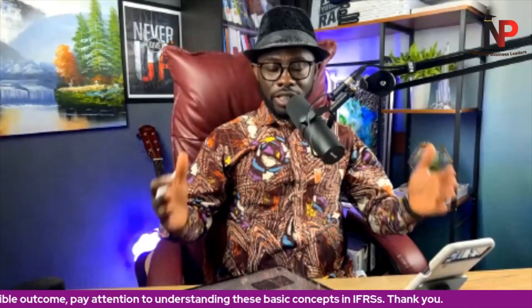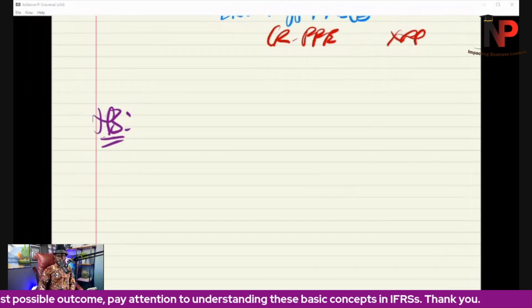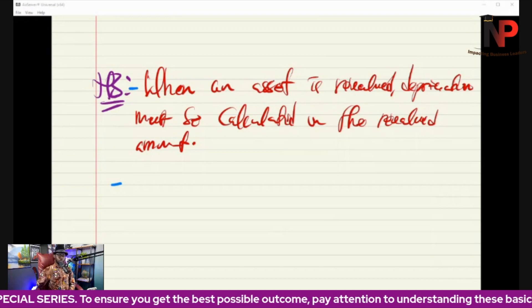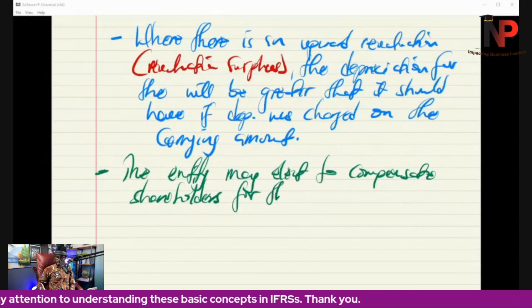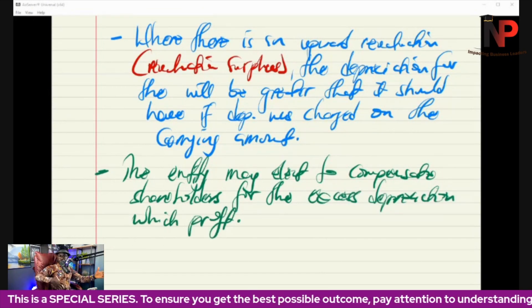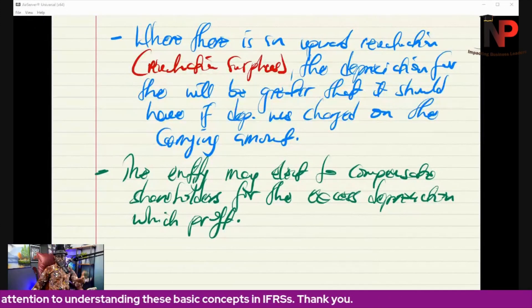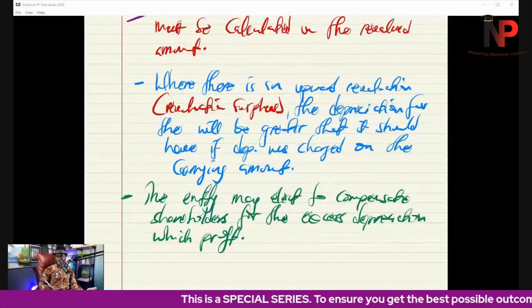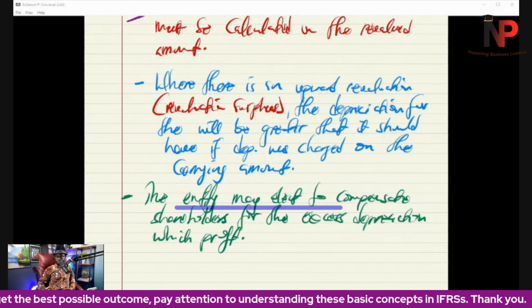Once an asset has been revalued, depreciation must then be calculated on the revalued amount. Where there is an upward revaluation, more depreciation will be charged than previously expected, reducing profit and therefore dividends available to shareholders. Because of this, the entity may elect — and please note this is optional; if the question is silent, do not do it; follow the question's directive — to compensate shareholders for the excess depreciation by transferring part of the revaluation surplus to retained earnings.